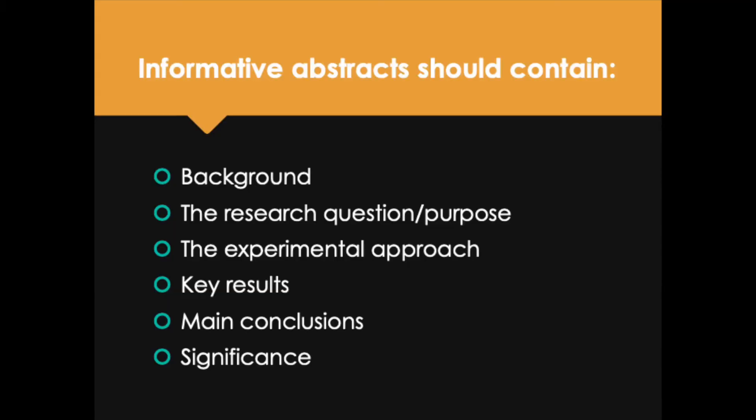For either of these types of abstracts, it's going to contain all of the elements of your journal article in that short space — so it's a little tricky and challenging to write. For informative abstracts, the sentences will include the background, the research question or purpose, the experimental approach, the key results (not all of the results, but the key results), the main conclusions that come from those results, and also the significance of the work. All of these elements are going to be contained in that 200 to 350 word abstract.